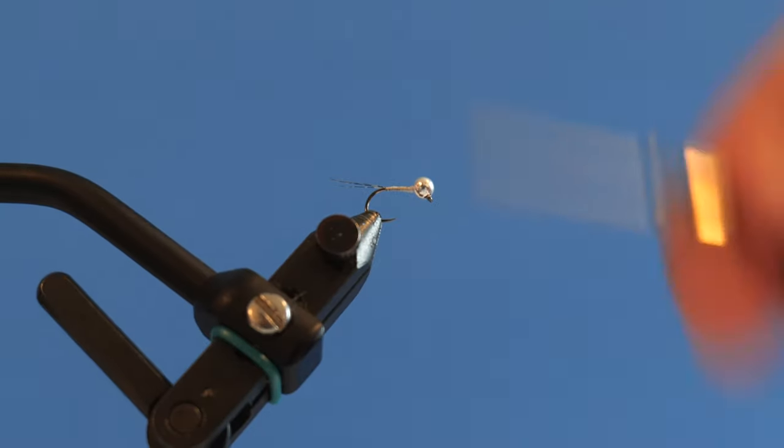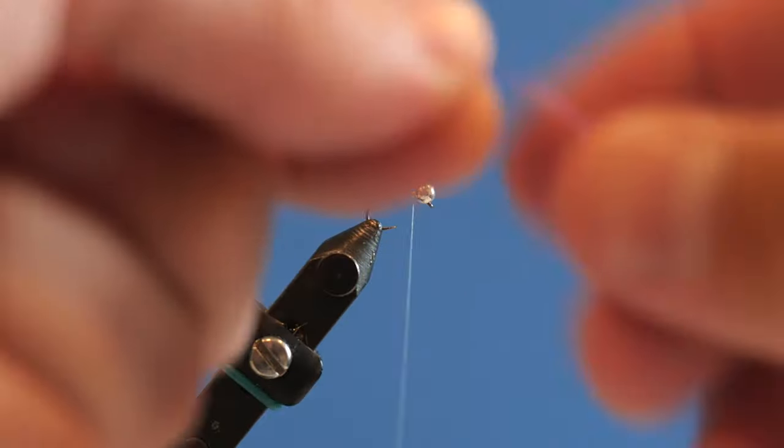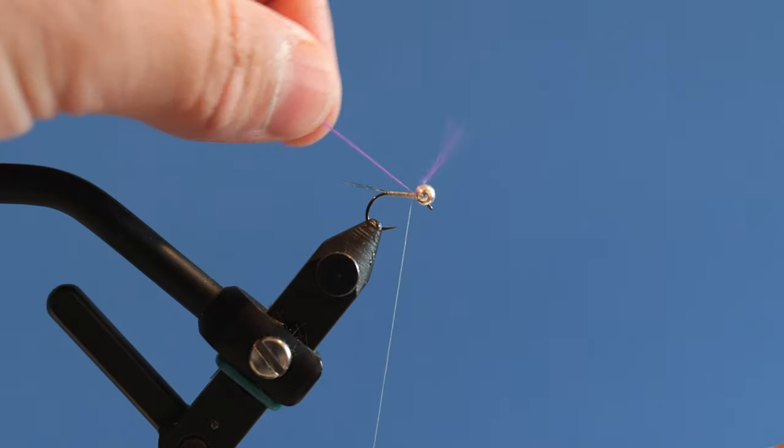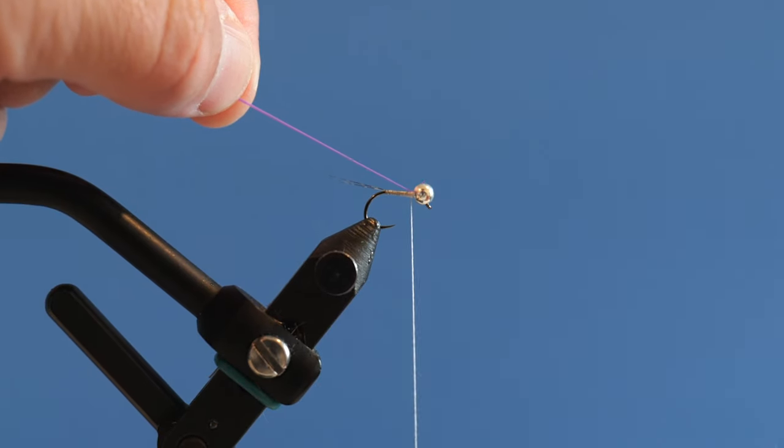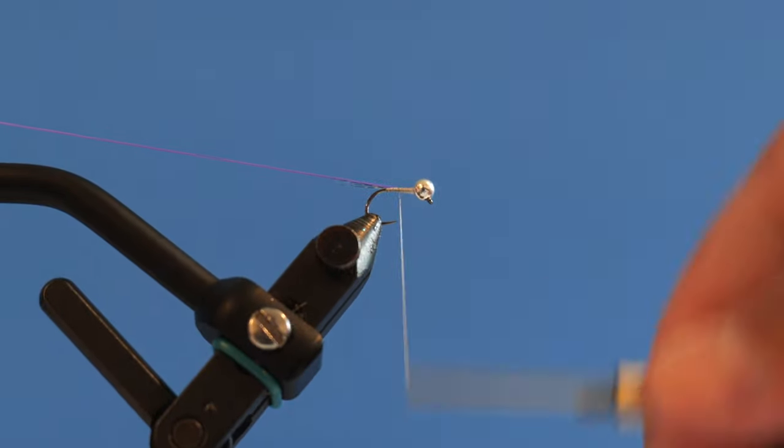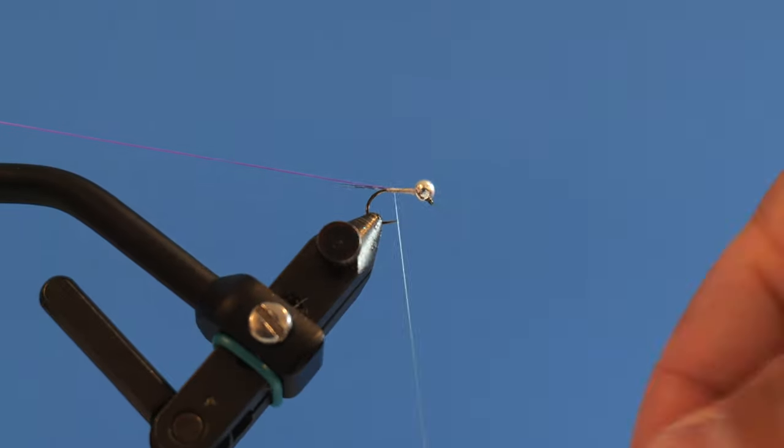Then I will do one wrap behind those fibers and it just helps those fibers stand up a little bit so they don't get pushed down. Then I run back forward and trim off my excess tailing fiber. Come back up and I grab my glow bright purple number 15 and I wrap that around the thread. I get that just up on top like that and then I capture it.